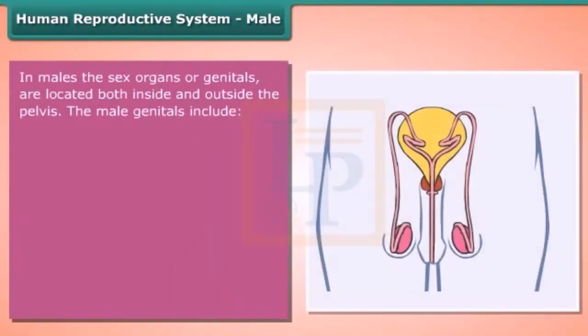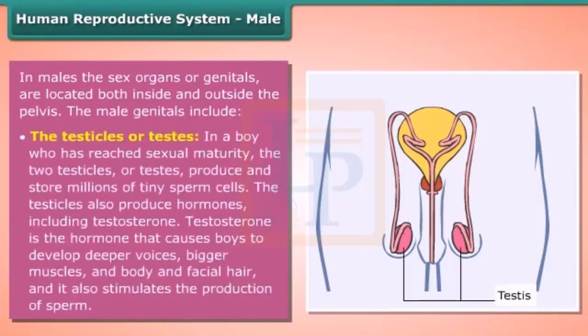In the male human reproductive system, the sex organs or genitals are located both inside and outside the pelvis. The male genitals include the testicles or testes. In a boy who has reached sexual maturity, the two testicles or testes produce and store millions of tiny sperm cells.